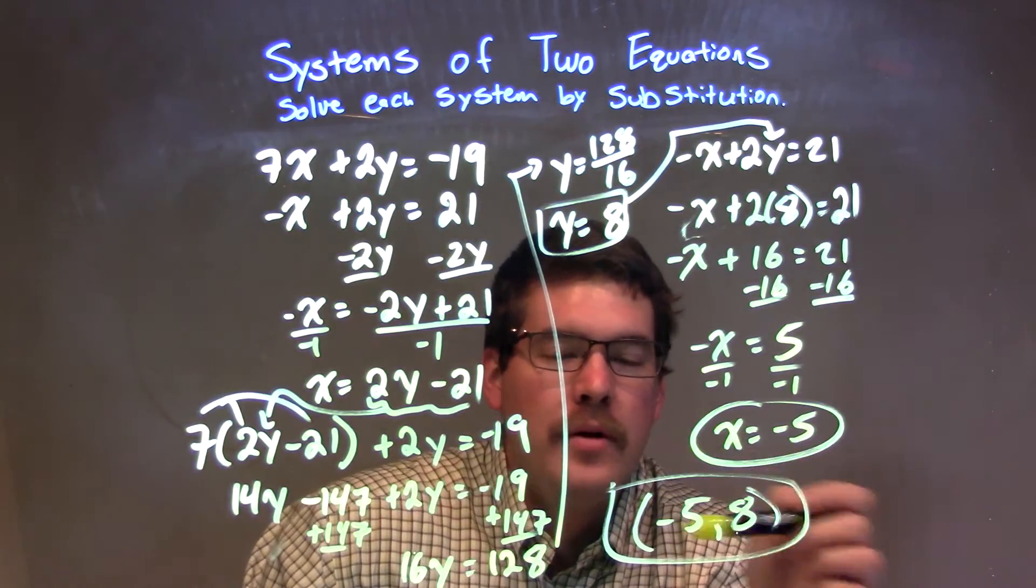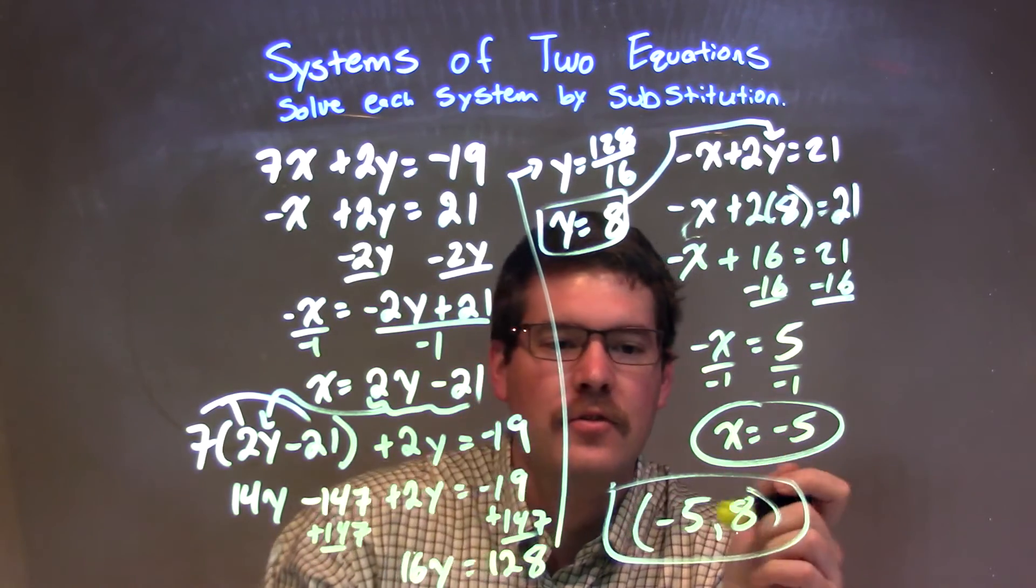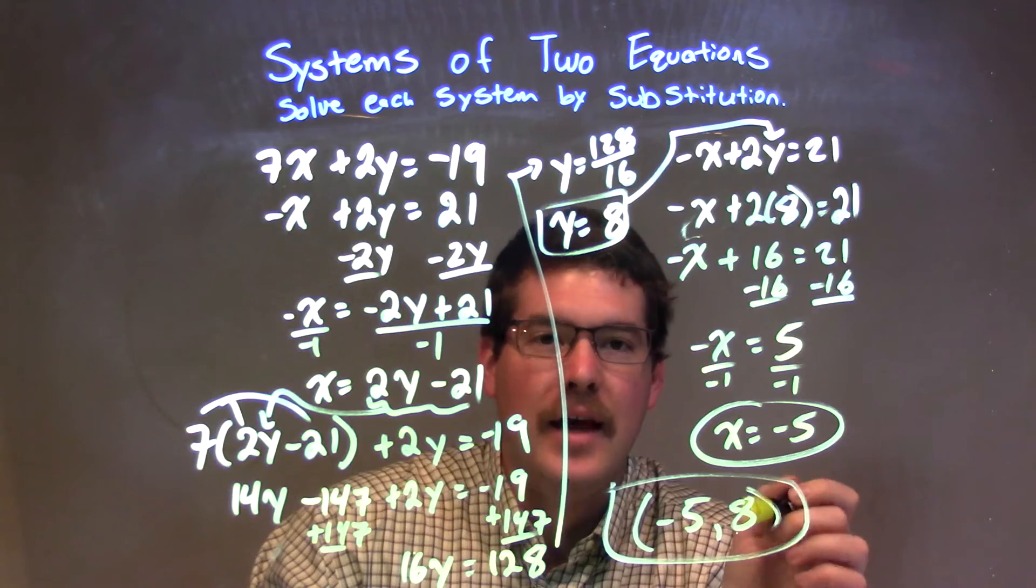So I have x equals negative 5 right there. So now my coordinate point right here, which is combining both of them together. Our final answer, using substitution, negative 5 comma 8.